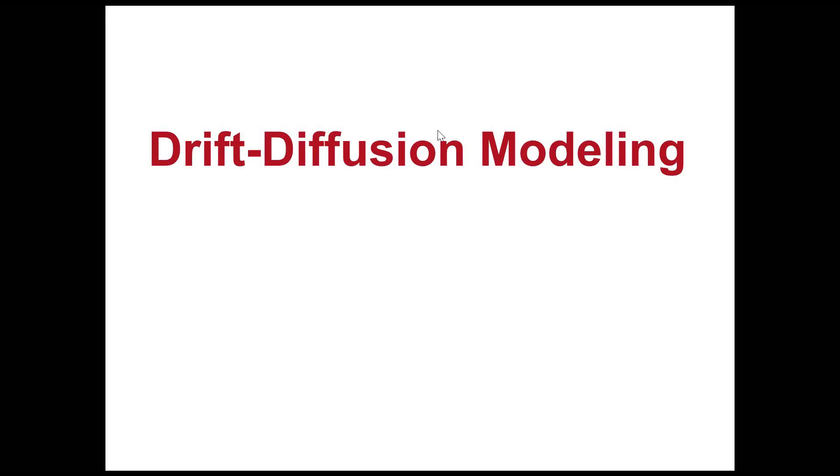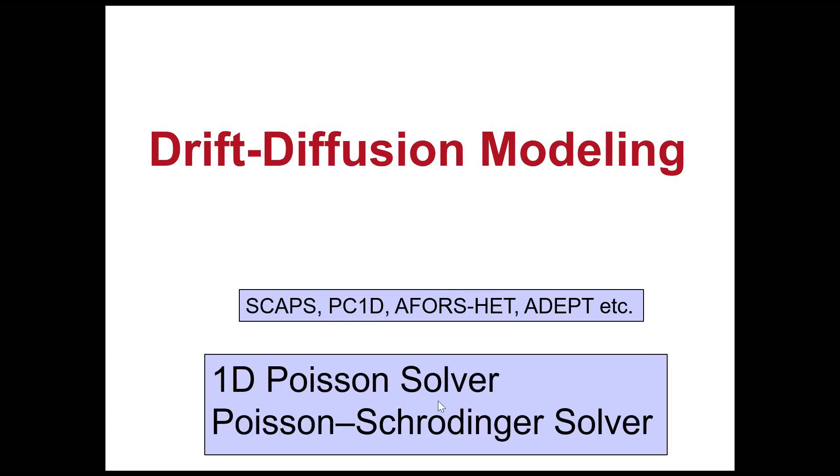If I talk about photovoltaics, there are a couple of simulators available like SCAPS, PC1D, Foreset, ADAPT, and many others. What are they basically doing? The other name for them could be one-dimensional Poisson solver. They solve Poisson equation or Poisson-Schrodinger equation, basically one-dimensional Poisson or Poisson-Schrodinger solvers.